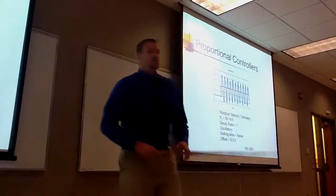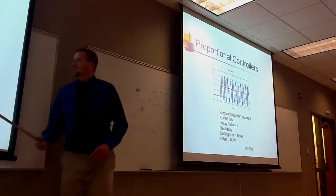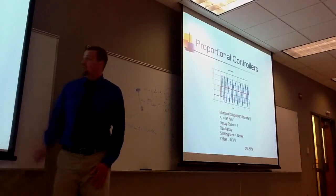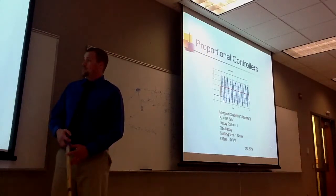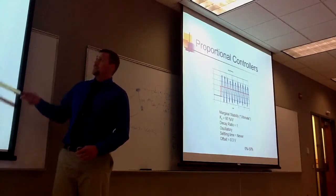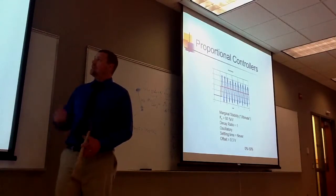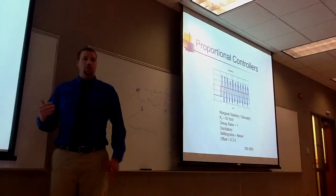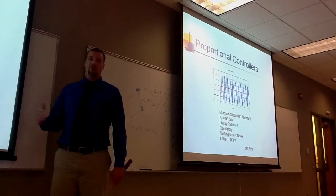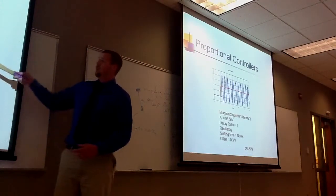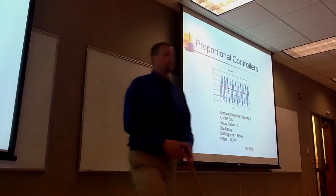And then finally, we have the marginal stability, the ultimate. My KC value for that was 93% per volt. It never settles. It stays oscillatory the whole time. And the average offset, though I don't know that you could really claim that it averages out. But the average offset of all that is about 0.3 volts.